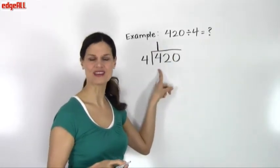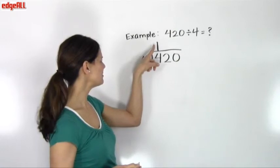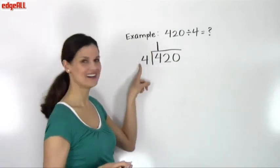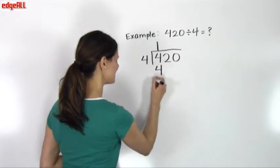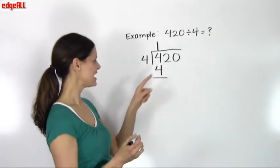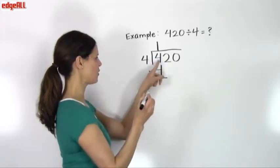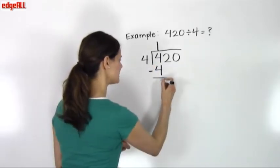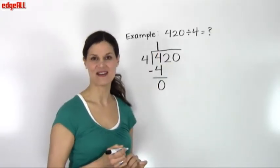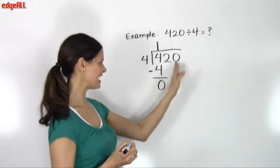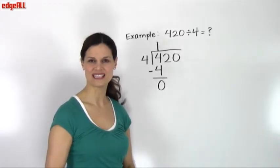Go ahead and perform the calculation. I do 1 times 4 equals 4, and I place that 4 right here underneath this 4. Now I subtract 4 minus 4 equals 0. In that first calculation, I have a remainder of 0, but I'm not finished yet. I still have more numbers in my dividend.